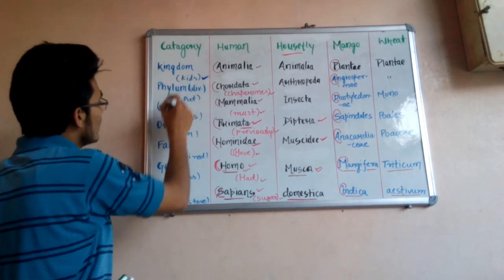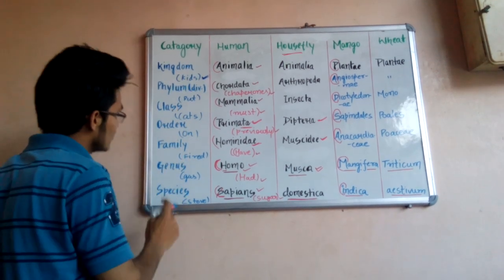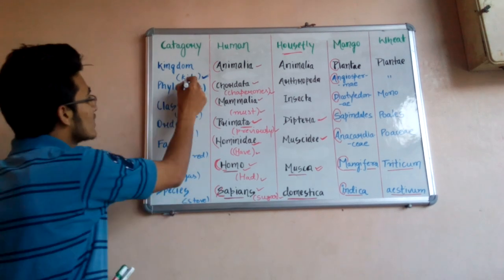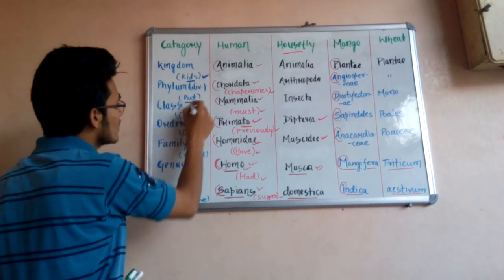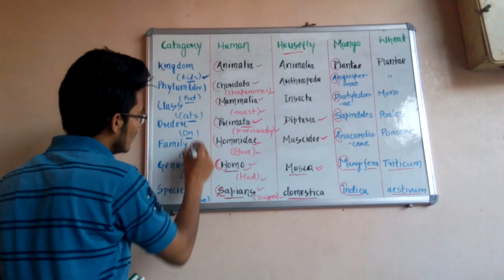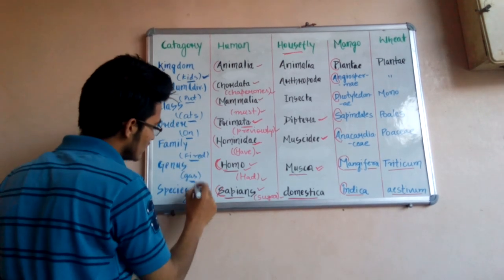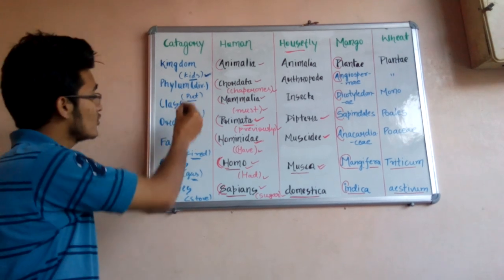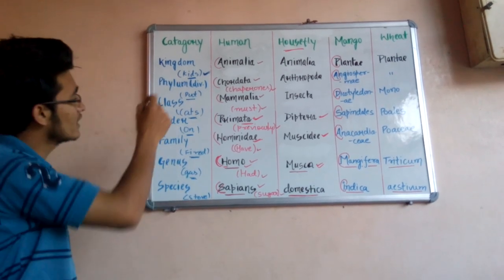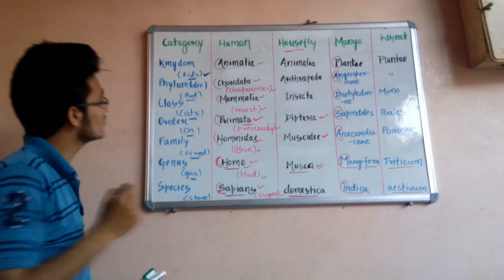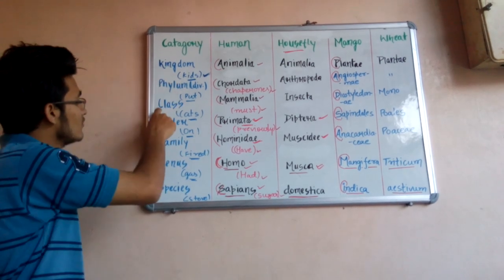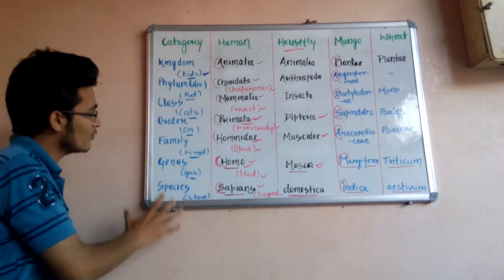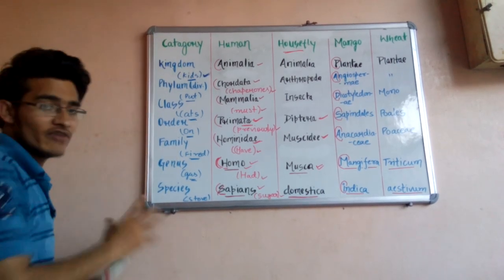The taxonomical hierarchy is: Kingdom, Phylum, Class, Order, Family, Genus, Species. To memorize this, I have made the trick: 'Kids put cats on fire gas stove.' This simply stands for Kingdom, Phylum, Class, Order, Family, Genus, Species — the taxonomical hierarchy in decreasing order.